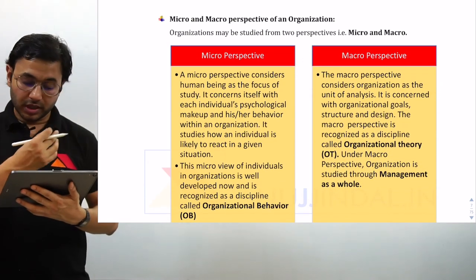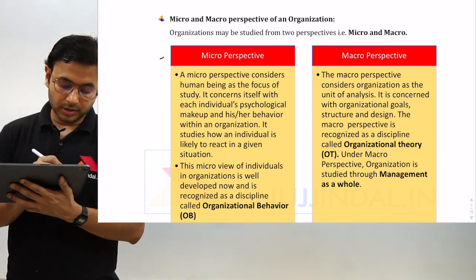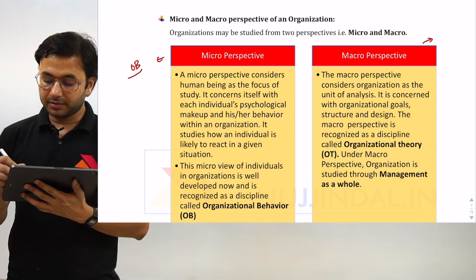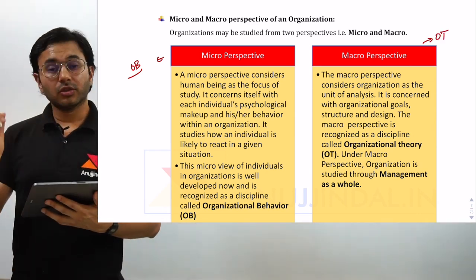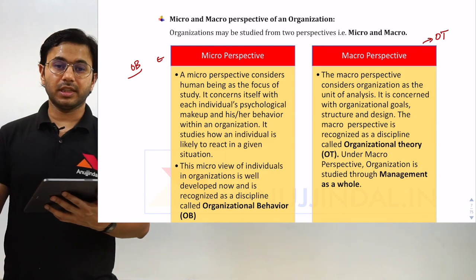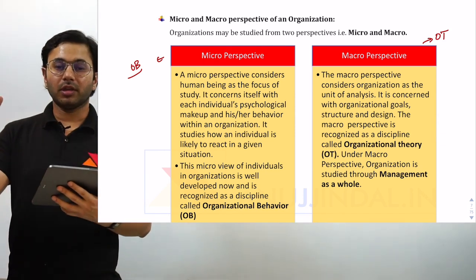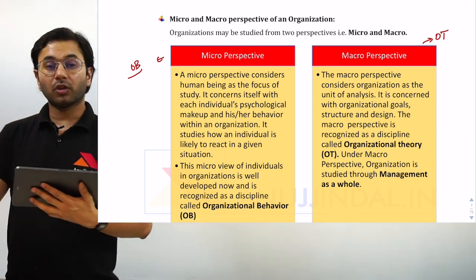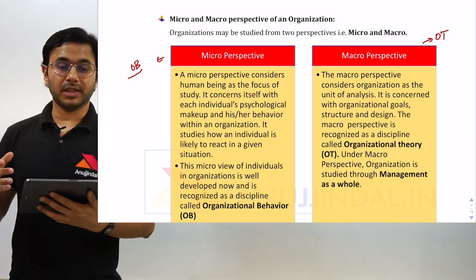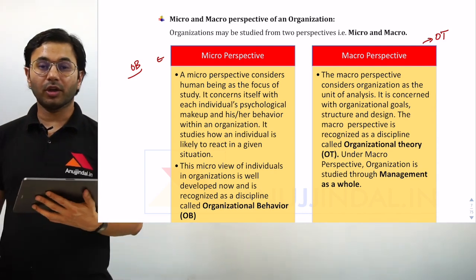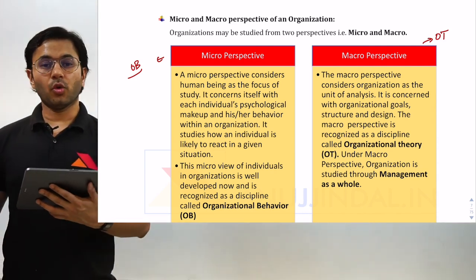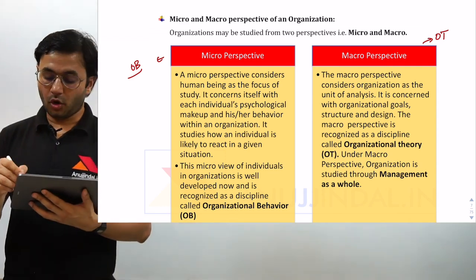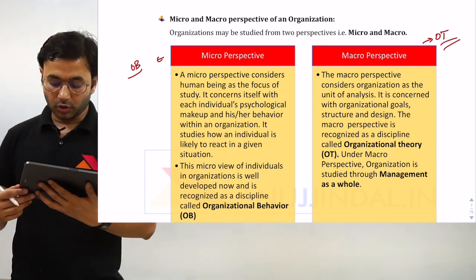Now let us understand the micro and macro perspective of an organization. In short, micro perspective deals with organization behavior and macro perspective deals with organization theory. The micro perspective talks about people in the organization — in Apple, all the employees plus Steve Wozniak, Steve Jobs, or Tim Cook. Whereas when we talk about Apple as a whole, Patanjali as a whole, or Microsoft as a whole, we are talking about macro perspective, which we normally understand as organization theory.